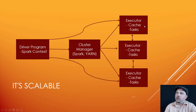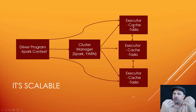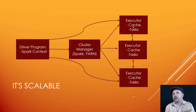Every node that you run on — every machine — might have an executor process, which has its own cache and its own list of tasks. It can split that data up to multiple executors. If you have a massive data set, it might take one little chunk of it and put one chunk on each of those different nodes on your cluster for parallel processing.